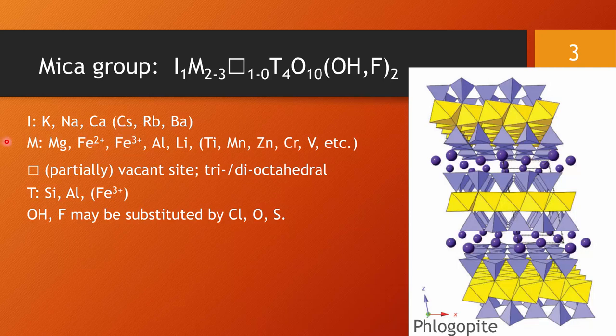On the M position we find dominantly magnesium and iron. Ferric iron less commonly than ferrous iron. There might be aluminum and lithium. Titanium, manganese, zinc, chromium, vanadium, a number of others might be minor or trace elements. Titanium being the most abundant of them.